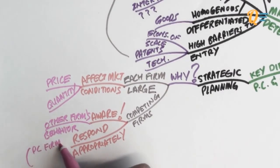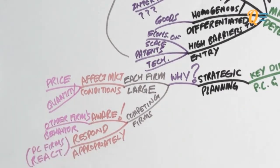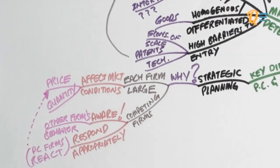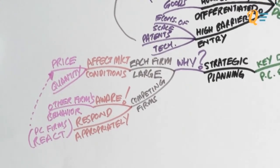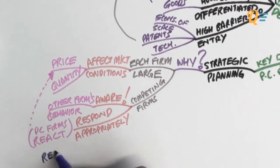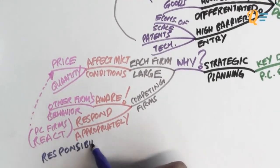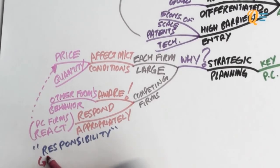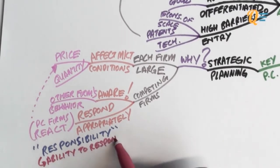Now, perfectly competitive firms, they react. They don't respond, they react. So PC firms react to things like market price. So when there's a change in the market price, PC firms will actually change the quantity produced. A good way to remember this is that there needs to be a lot of responsibility in the duopoly market. And responsibility can also be defined as the ability to respond.